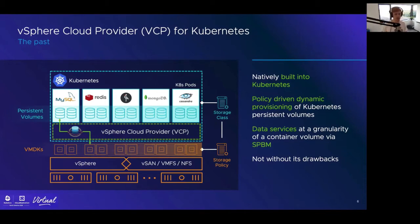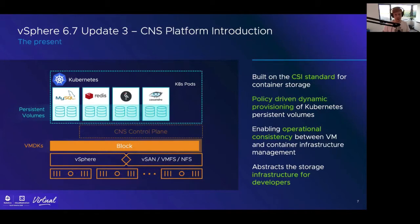The drawback was that if there was a bug in the vCP, you had to upgrade your entire Kubernetes distribution. For example, if you were on 1.11 and a bug was fixed in 1.12, you'd have to move your whole Kubernetes distribution — a full major step — rather than just updating the vCP itself.